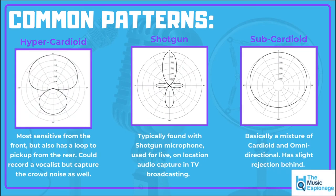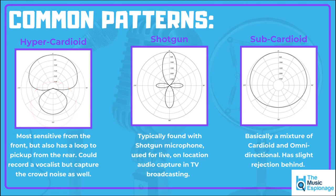Three other common polar patterns are hypercardioid, shotgun, and subcardioid. Hypercardioid is essentially cardioid but with a lobe from behind. You might use it to capture the main sound source you're pointing at, while also capturing the crowd from behind the singer, giving you a lifelike, realistic recording environment.